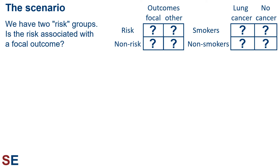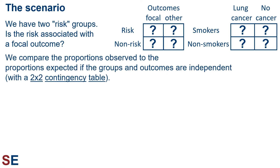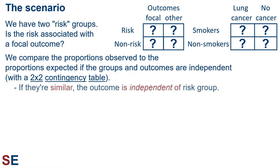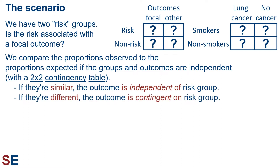We would consider getting cancer to be the focal outcome, the one we care about, and ask whether that outcome is more or less likely depending on the risk factor — smoking or not smoking. We compare the proportions observed to the proportions expected if the groups and outcomes are independent. We use the 2x2 contingency table. If the proportions are similar, the outcome is independent of the risk group, but if the proportions are different, the outcome is contingent on the risk group.